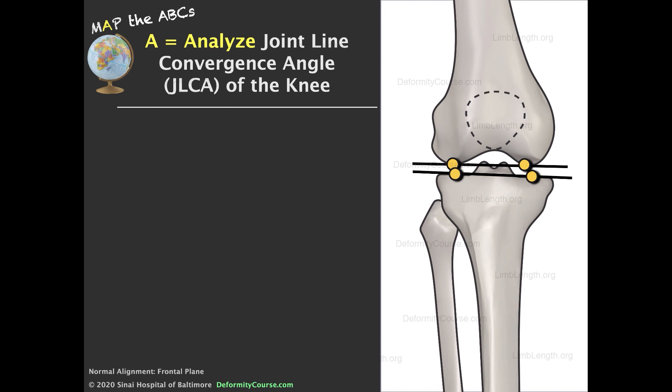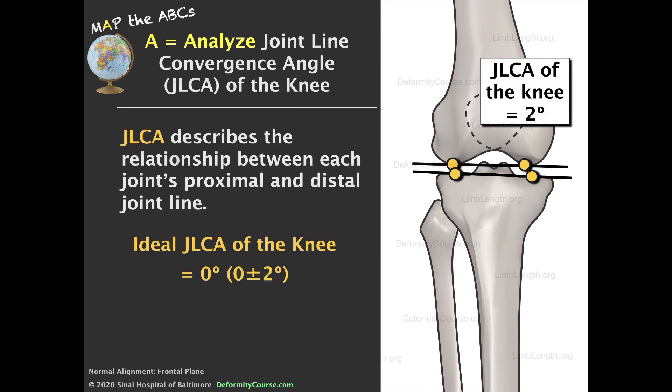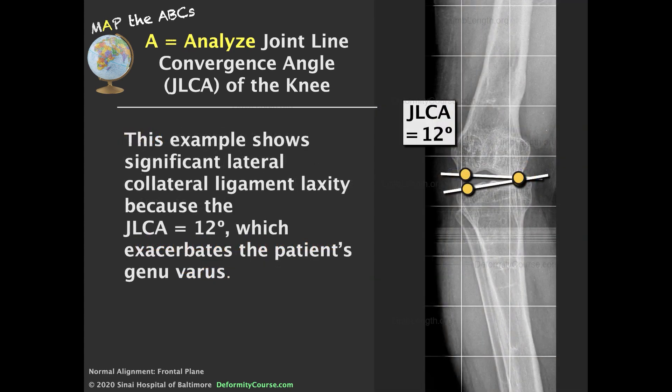The joint line convergence angle of the knee is defined as the angle between the distal femoral joint line and the proximal tibial joint line. To be within normal limits, it needs to be less than two degrees. Abnormalities in the joint line congruency angle indicate soft tissue laxity, which can be a complicating factor in correcting lower extremity alignment.